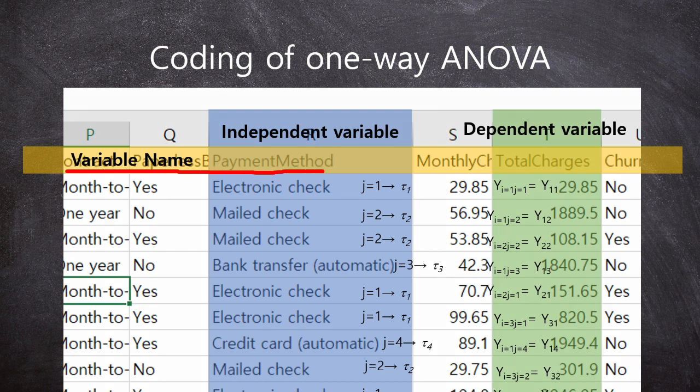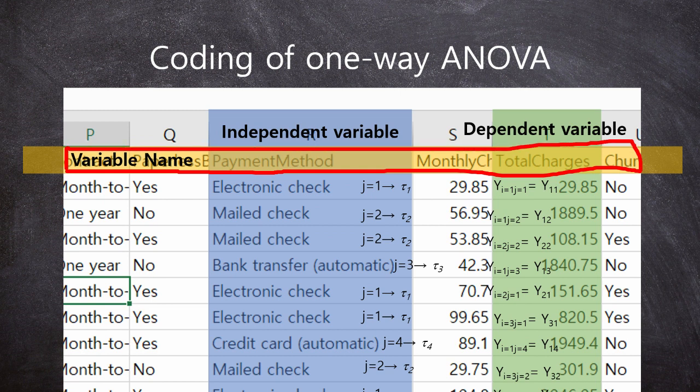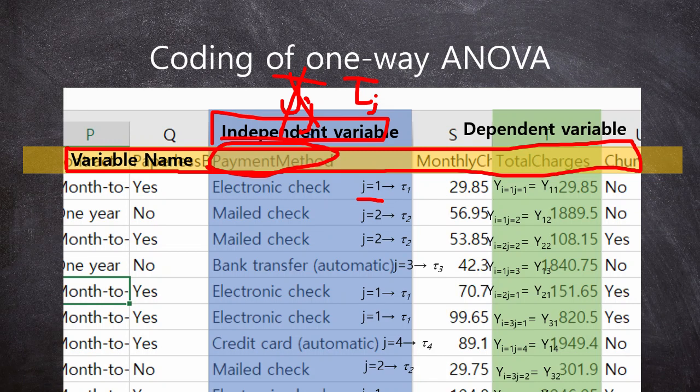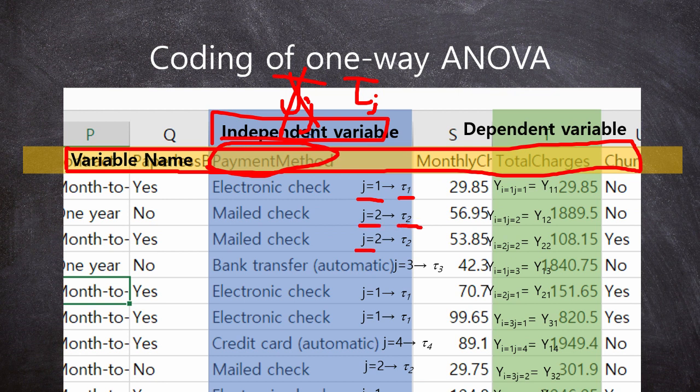Okay. This row is a variable name. Payment method. This is an independent variable. Here, the tau. This is a tau j. Oh, no, no. This is not tau. Tau j is like this one. Tau j. Here, the j means the group. So, here, electronic check is j=1. In this case, we describe tau_1. Mail check is j=2, tau_2. Mail check is j=2, tau_2. Same. And, the bank transfer is j=3. So, tau_3. Electronic check is j=1, tau_1. Like this. Tau_1. Electronic check.